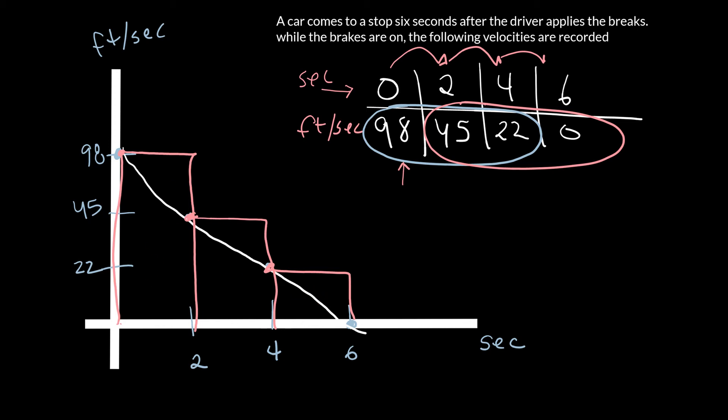And that's important instead of just memorizing your picking values from the table. So you should be able, it should be clear to see that this is going to be an upper estimate because I'm above the graph. So I'm going to take each height times each width. Well, each width is two, so two times 98 plus 45 plus 22. And when I do that, I get 330 feet.